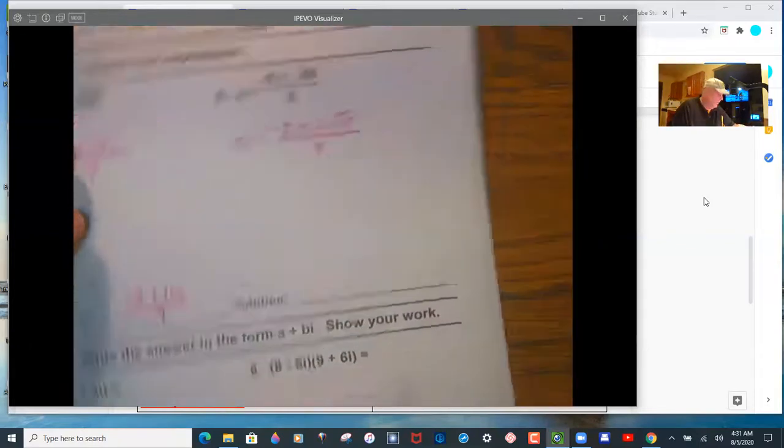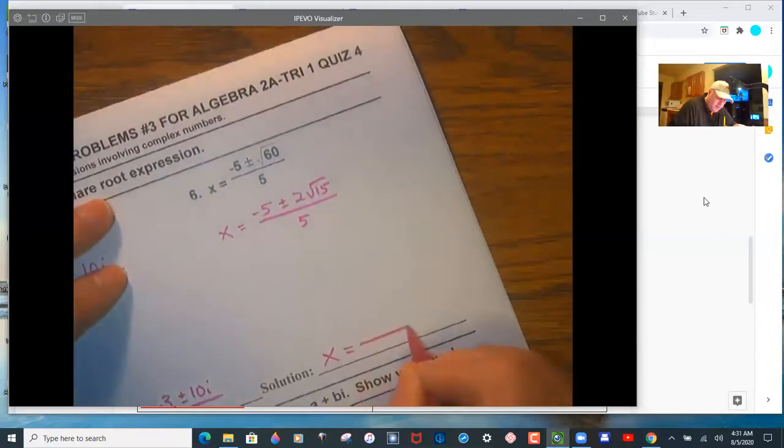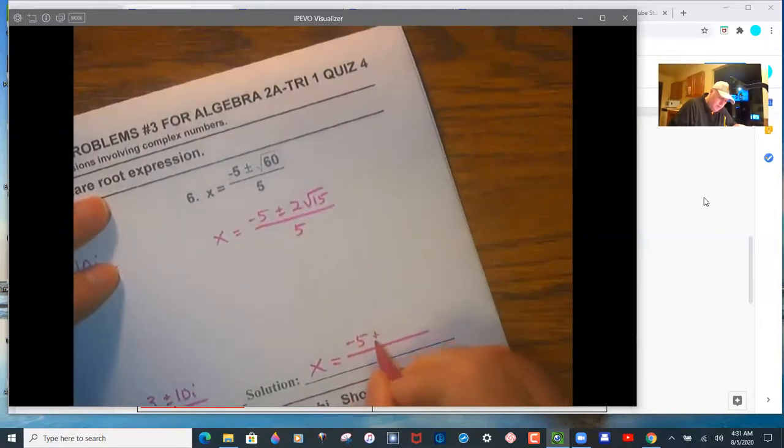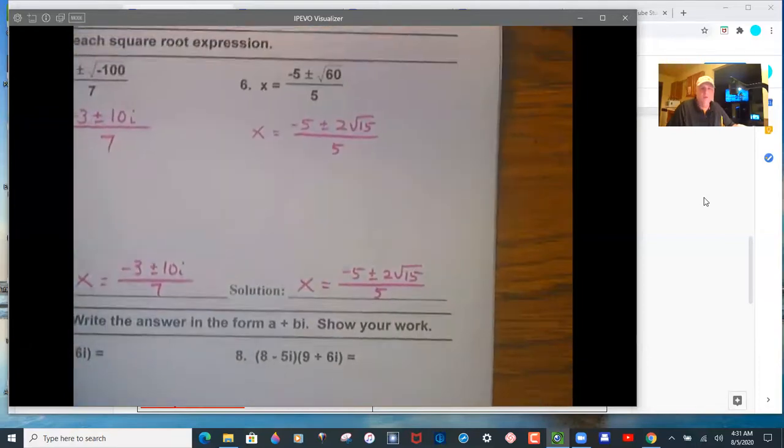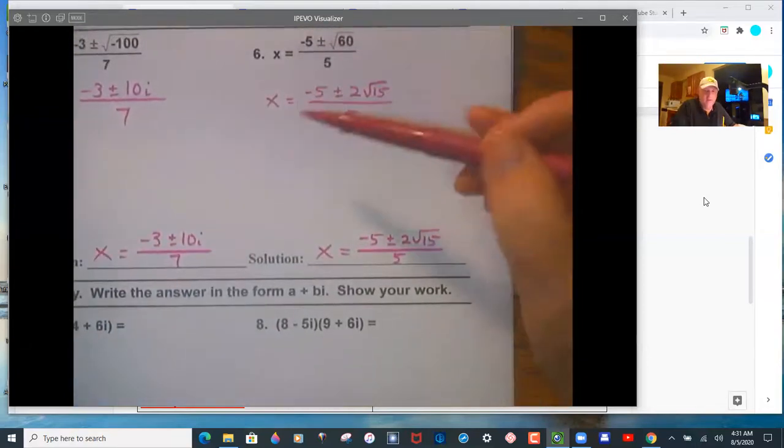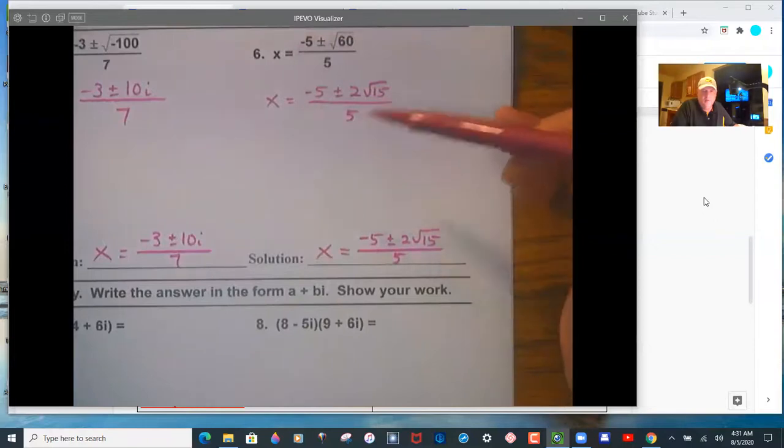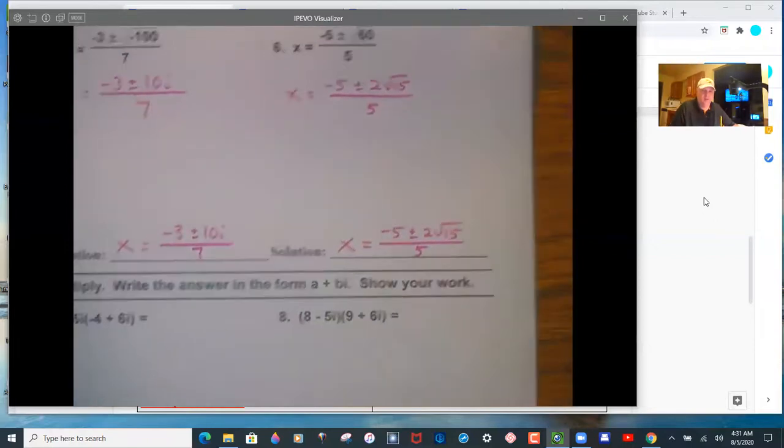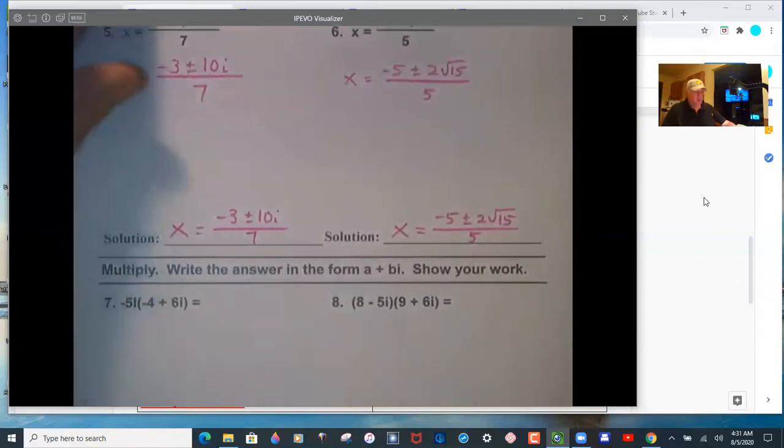And then there's nothing that will reduce out of that. So it's got to go into the 5, 5, and the 2. I always get the question, can you divide and say negative 1 plus 2 fifths times the square root of 15? You can. I prefer that you don't do that, but you can.